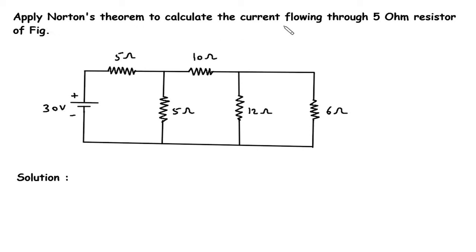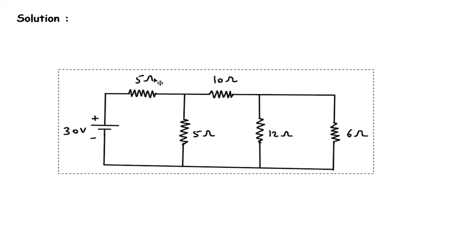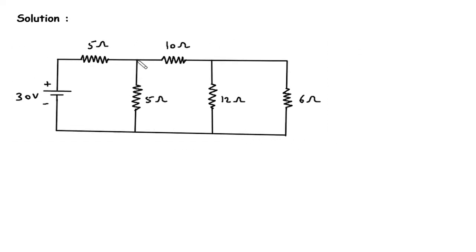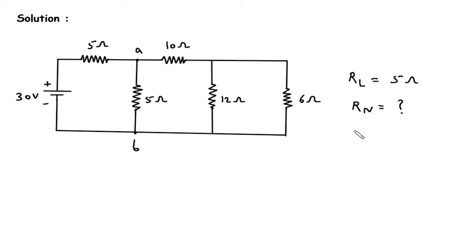Apply Norton's theorem to calculate the current flowing through the 5 ohm resistor. We have to calculate the current flowing through this 5 ohm resistor using Norton's theorem. Let's say this is terminal A and this is terminal B. So between terminal A and B, RL is equal to 5 ohm. For Norton's equivalent circuit, we have to find Rn, that is Norton's resistance, and In, that is Norton's current.